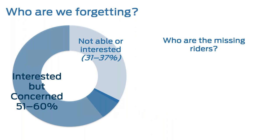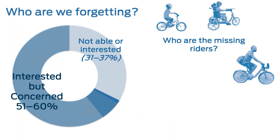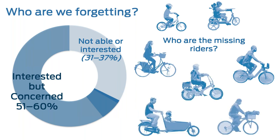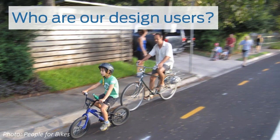We want to pull apart who the riders are that we're missing. Are we thinking about children? Women? People with disabilities? Seniors, who are a huge growing population? More casual riders, people moving cargo, people biking for deliveries, bike share riders — very different riding characteristics. We need to integrate these different users as our design users and think about how infrastructure needs to meet this missing market.